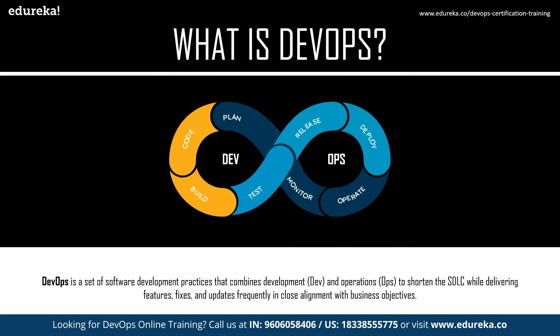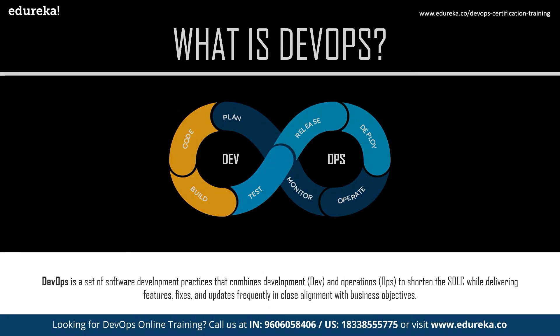Moving on, what is DevOps? DevOps is a combination of two words: development and operations. It is a practice that allows a single team to manage the entire application development life cycle — that is, development, testing, deployment, and monitoring. DevOps is a software development approach with which you can develop superior quality software quickly and with more reliability. It consists of various stages such as continuous development, continuous integration, continuous testing, continuous deployment, and continuous monitoring.